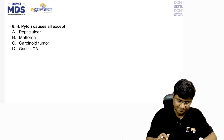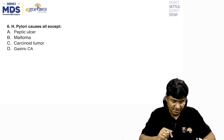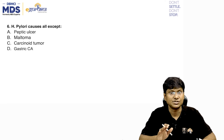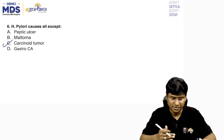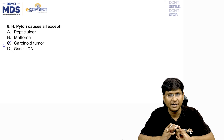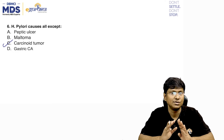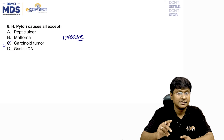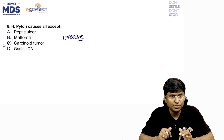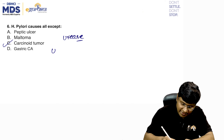Next question: H. pylori causes all except — options: peptic ulcer, MALToma, carcinoid tumor, gastric carcinoma. H. pylori is not associated with carcinoid tumor. H. pylori is a gram-negative, non-sporing, microaerophilic extracellular bacterium. It releases urease, which converts urea to ammonia.